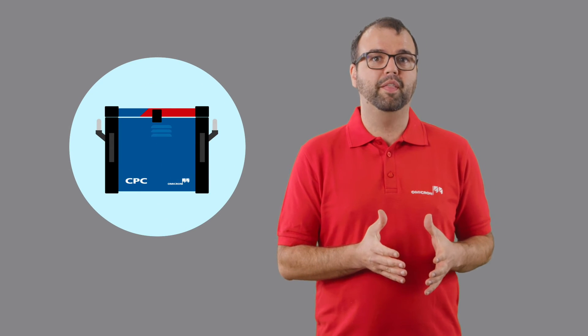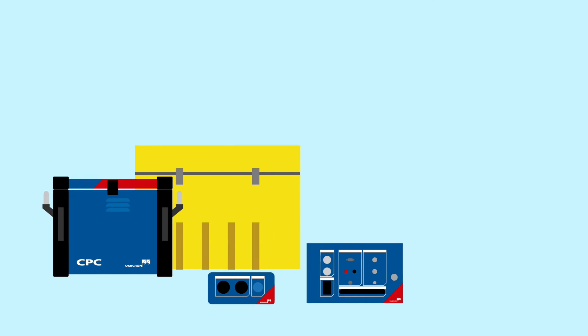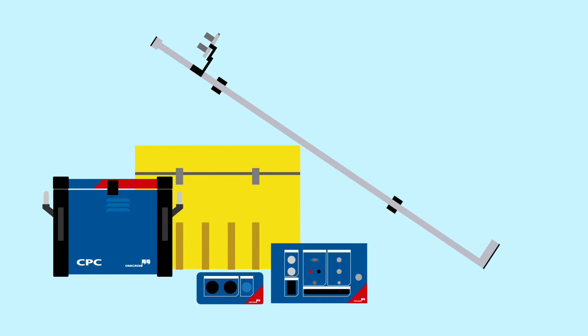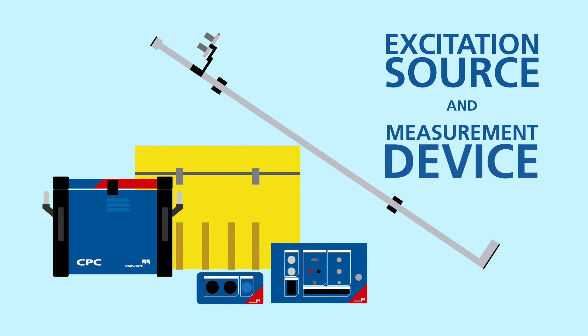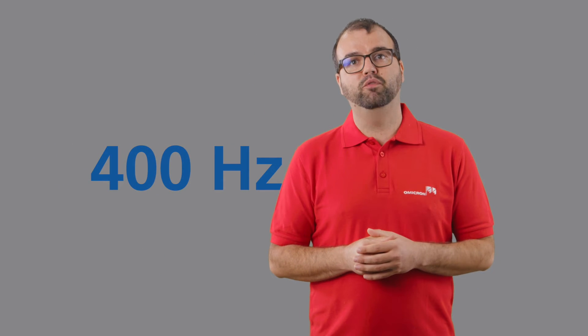Enough power out of an ordinary power plug in combination with a high accurate in and output allows the CPC-100 to act as both the excitation as well as the measurement device. This gives us the possibility to test either with rated frequency 50 or 60 hertz or frequencies even up to 400 hertz.